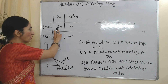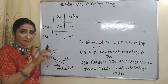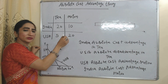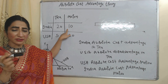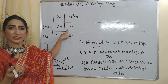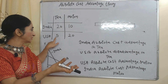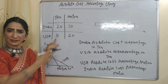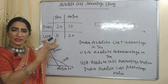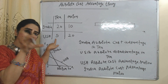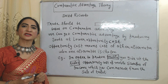India has absolute cost disadvantage in production of melon, so India should reduce production of melon and import melon from USA. Similarly, USA has absolute disadvantage in production of tea, so USA should reduce production of tea and import tea from India.